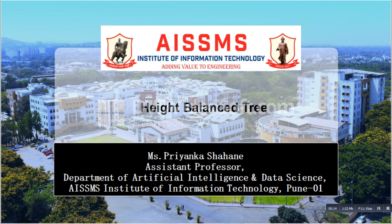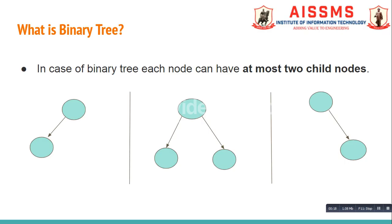In this video we are going to study the concept of height balance tree. In order to understand the concept of height balance tree, first of all we need to know what is binary tree. In a binary tree, each node can have at most two child nodes — only a left child, only a right child, both left and right child nodes, or sometimes no child nodes at all.